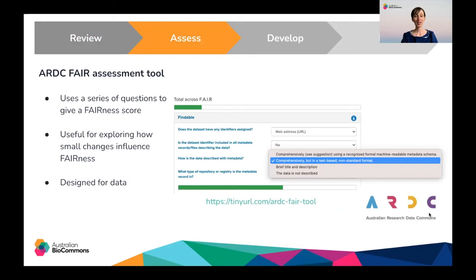The next step in our approach was to assess how fair the materials are already. To do this, we used materials from two different events as a test case, and these materials represented the variety of materials that we see. The first way that I assessed fairness was to make use of the ARDC fair assessment tool. This tool asks a series of questions based on the FAIR principles and calculates an overall fairness score. For example, you can see here for this question — how is the data described with metadata? — you can choose different options from the dropdown menu, and the overall score is adjusted in the green bar. I found this tool really useful for exploring how small changes in your approach or plan influences the overall fairness of the materials, and it highlighted that bringing the materials together into a single place would considerably improve the fairness and findability of those materials.